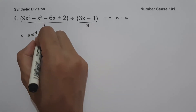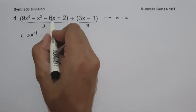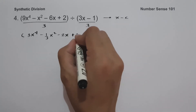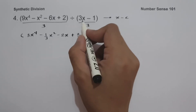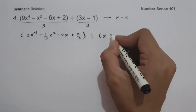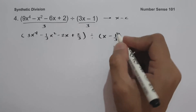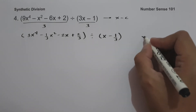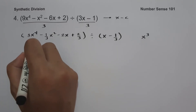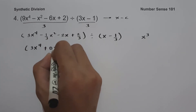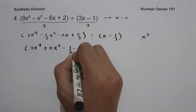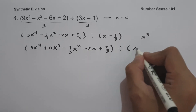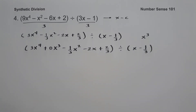So we have 9x to the 4th divided by 3, which is 3x to the 4th. Negative x squared divided by 3 is negative one-third x squared. Negative 6x divided by 3 is negative 2x. Two divided by 3 is two-thirds. On the divisor side, 3x divided by 3 is x, and negative 1 divided by 3 is negative one-third. Since the dividend is missing the x cubed term, we rewrite it as 3x to the 4th plus 0x cubed minus one-third x squared minus 2x plus two-thirds, divided by x minus one-third.